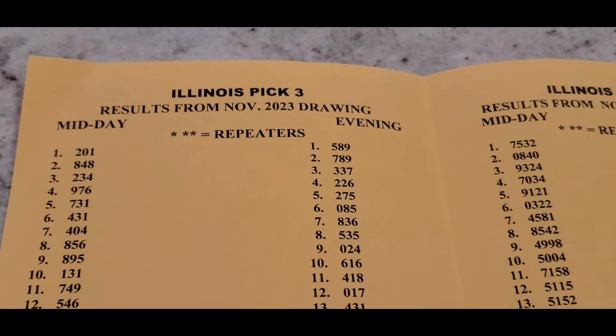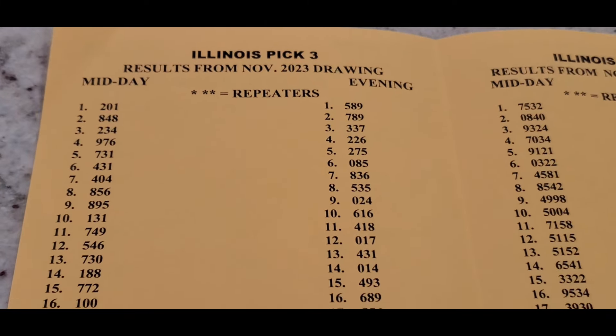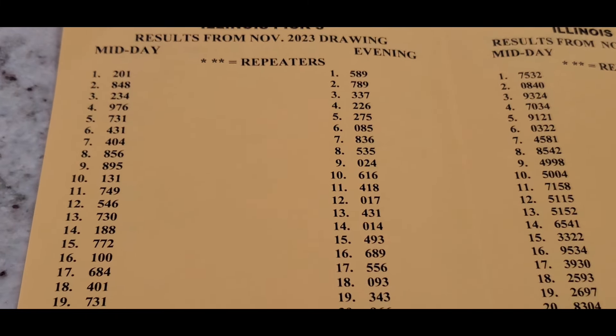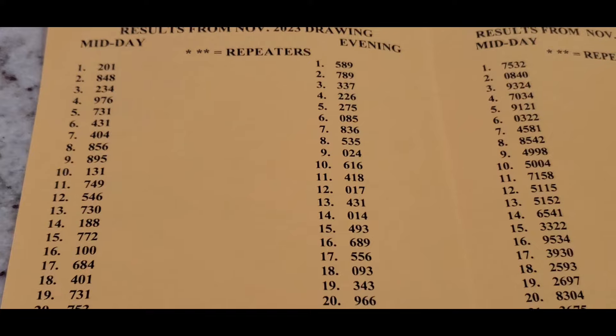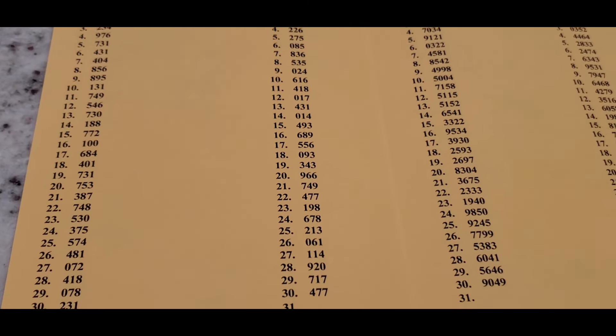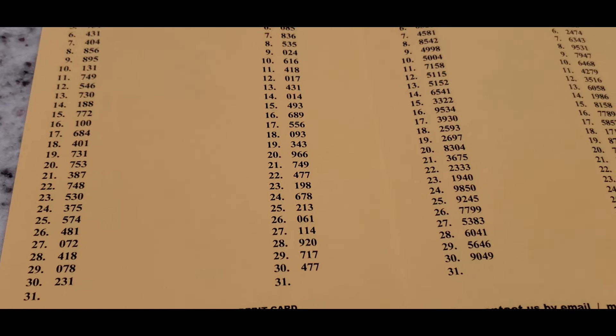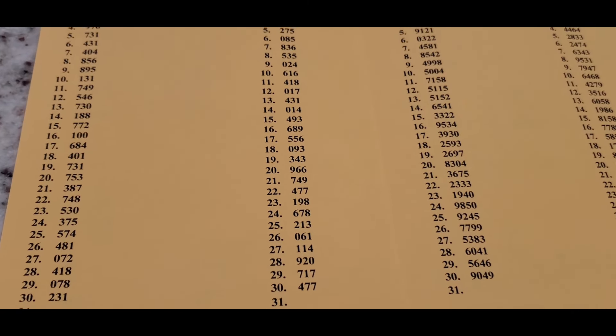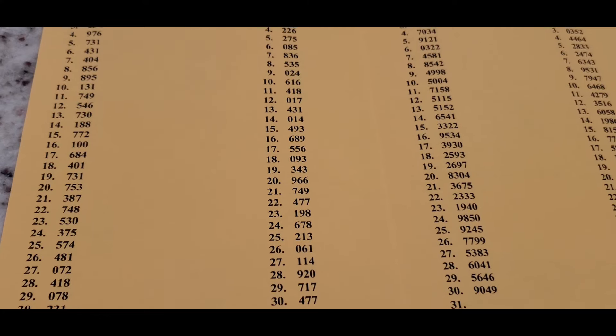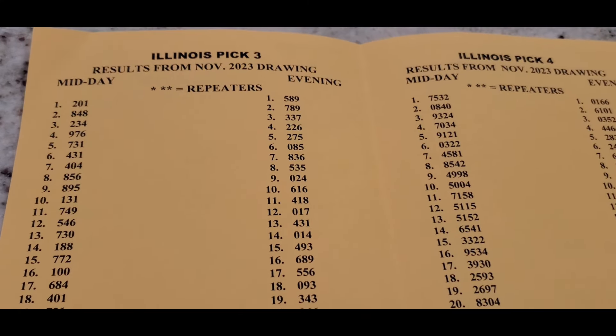Just scroll up here for the pick three side so you guys can check it out. You go all the way down to the 30th. No 31 days in November, it only goes up to 30, so be mindful of that. Scroll back up again, and then we'll go to the pick four side.